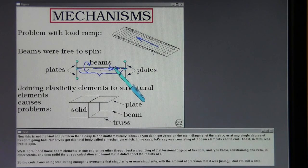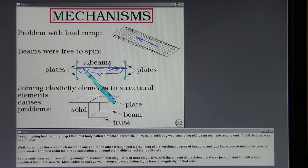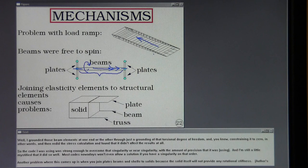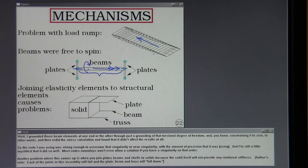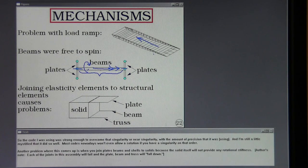Well, I grounded those beam elements at one end or the other through just a grounding of that torsional degree of freedom and constraining it to zero, in other words. And then redid the stress calculation and found that it didn't affect the results at all. So the code I was using was strong enough to overcome that singularity or near singularity with the amount of precision that it was solving. And I'm still a little mystified that it did so well. Most codes nowadays won't even allow a solution if you have a singularity on that order.